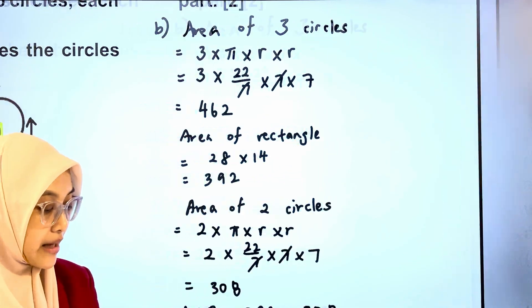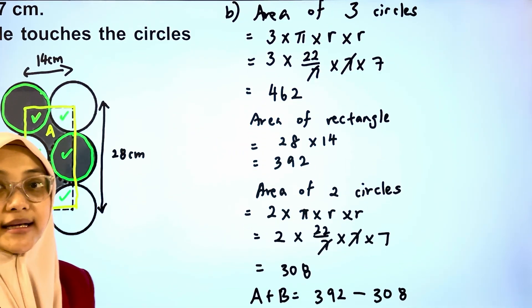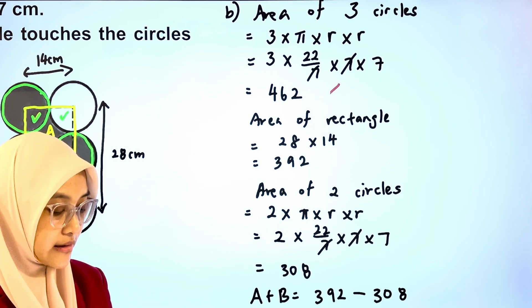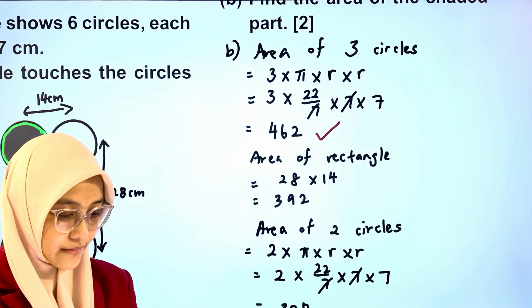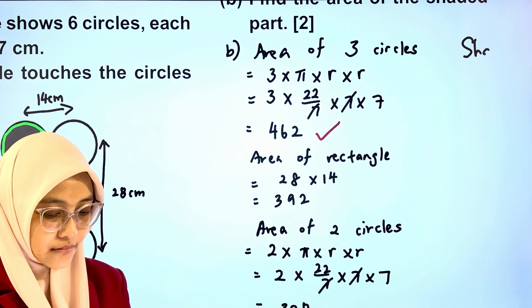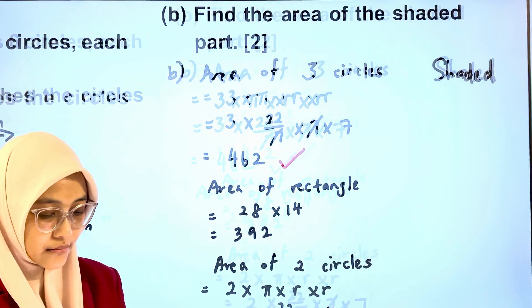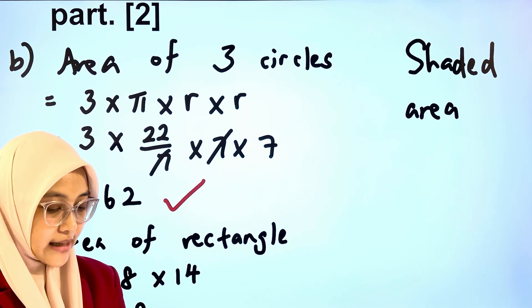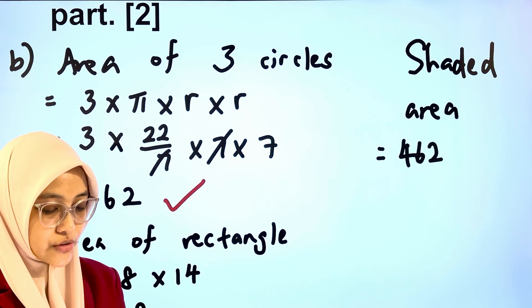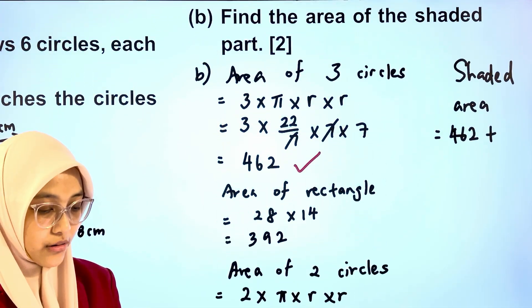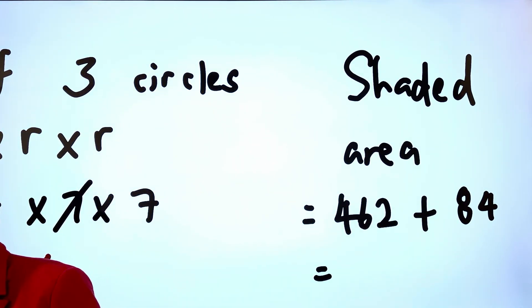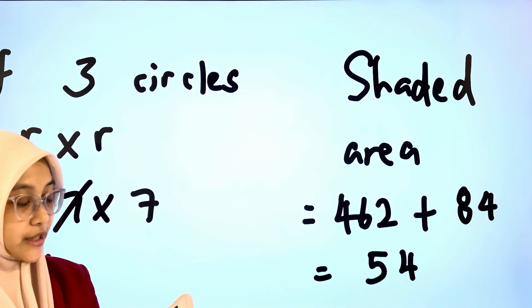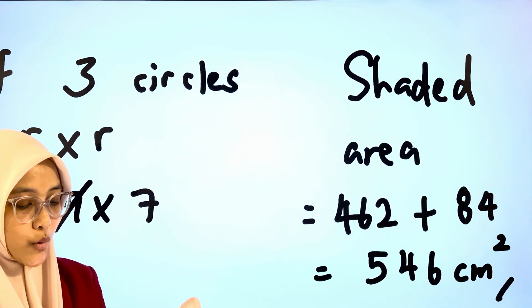Therefore, our last step, the area of the shaded part consists of area of the three circles plus area of A and B. That gives us 462 plus 84. Therefore, the area of the shaded part is 546 square cm.